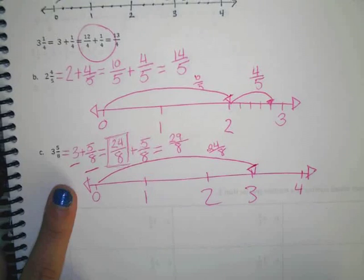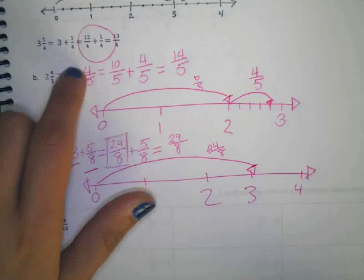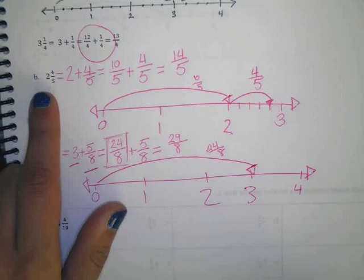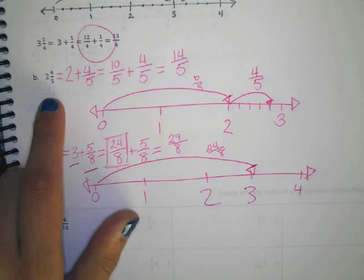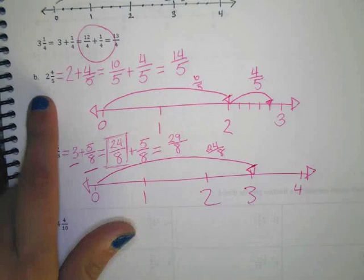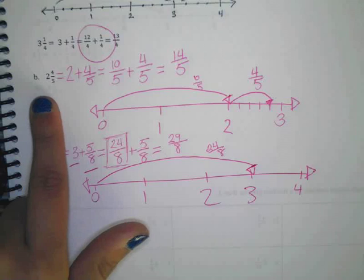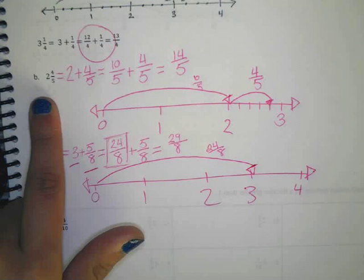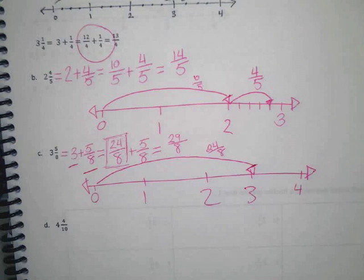So 24 eighths is the same as three. And then scooching back up to this one, we have to figure out how many fifths are in two. So in one hole, there would be five fifths, and in two holes, there would be ten fifths. What if we had five as our whole number? How many fifths would we have if we had five holes?